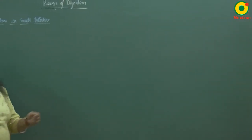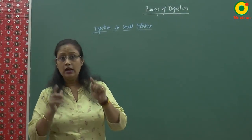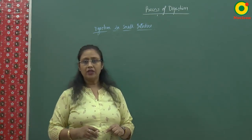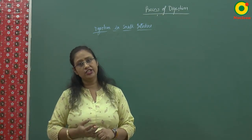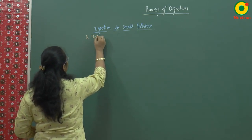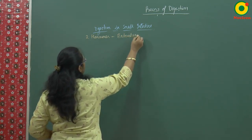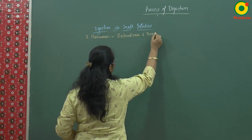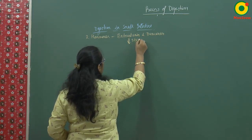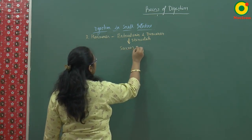Now the digestion in the small intestine. The food in the form of chyme has reached the small intestine from the stomach. Here two hormones — enterokinin and duocrinin — will stimulate the secretion of succus entericus.